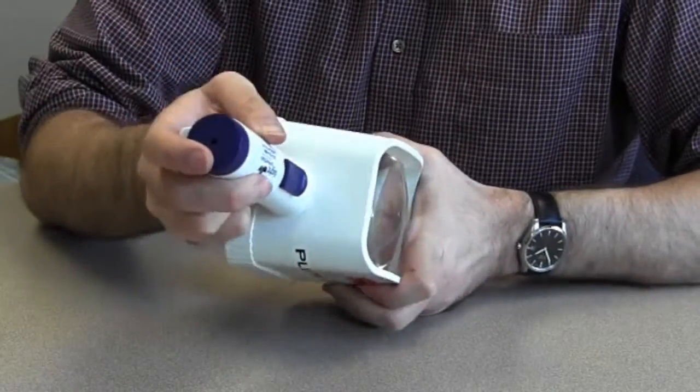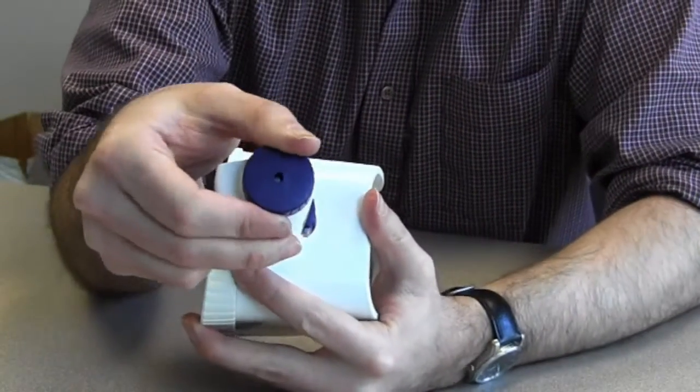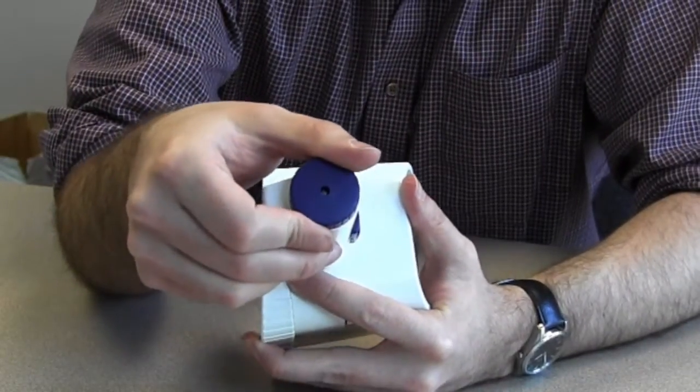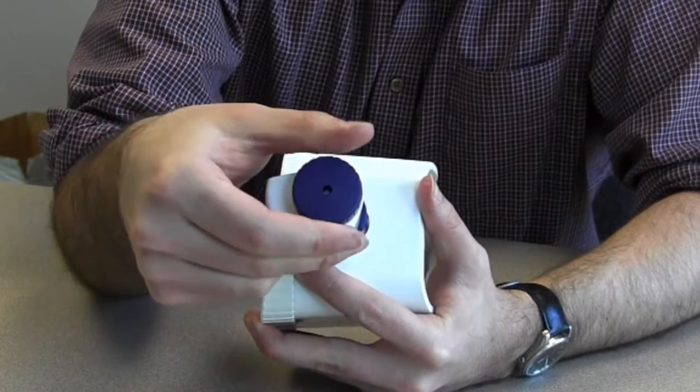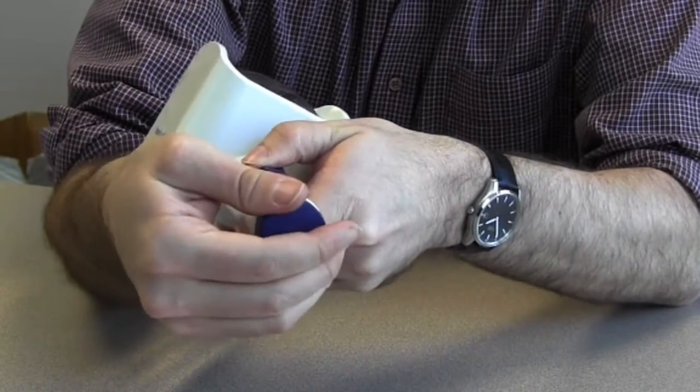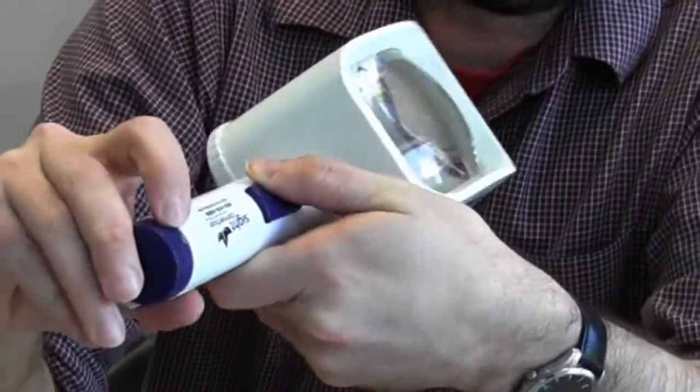Now once in a while, this blue knob here can get twisted a little out of place. If that happens, it gets a little harder to open. What you have to look for is on the magnifier, there's a little notch.